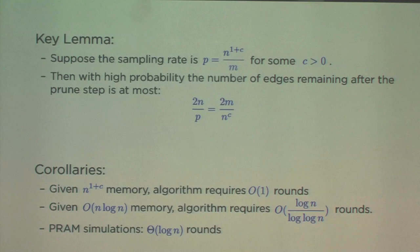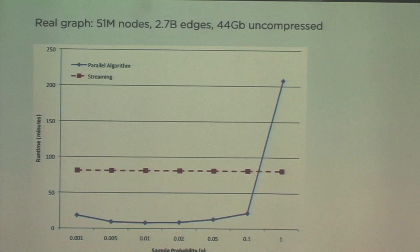So this is nice for theory, but does it actually work? So here's a small example. So for us small, about 44 gigs uncompressed. This is a subset of Twitter, so about 3 billion edges, 50 million nodes. Not too large. The running time is on the y-axis, the sampling probability is on the x-axis. The red dashed line is the streaming implementation, which really just said, let me take an edge, see if it fits. If it fits, add it. If it doesn't fit, let me take the next edge. And then the blue line is the parallel implementation. And the probability P is the sampling probability that we used in the first step. And this was just run for two rounds.